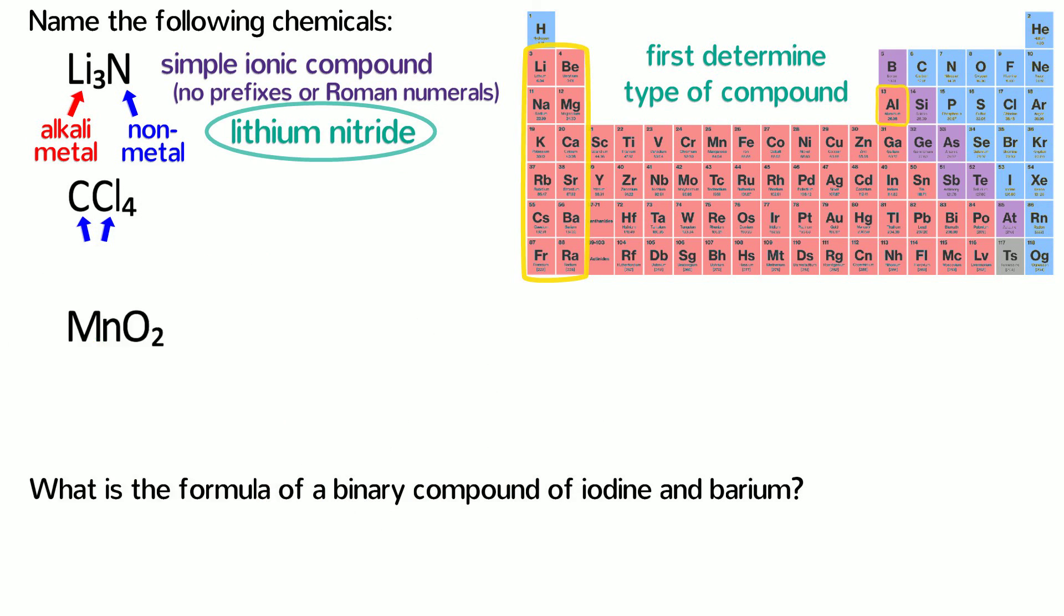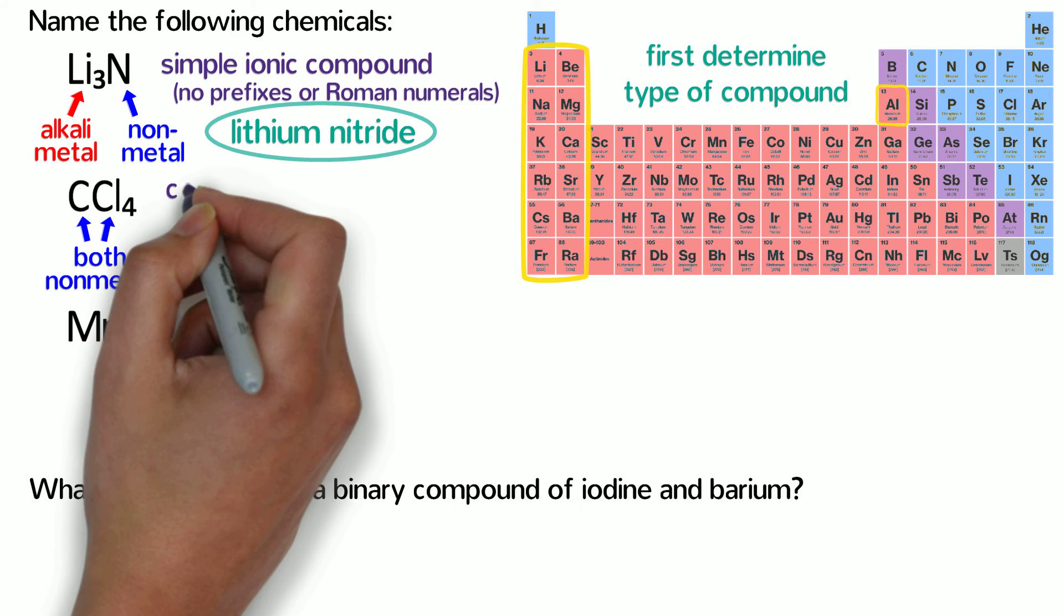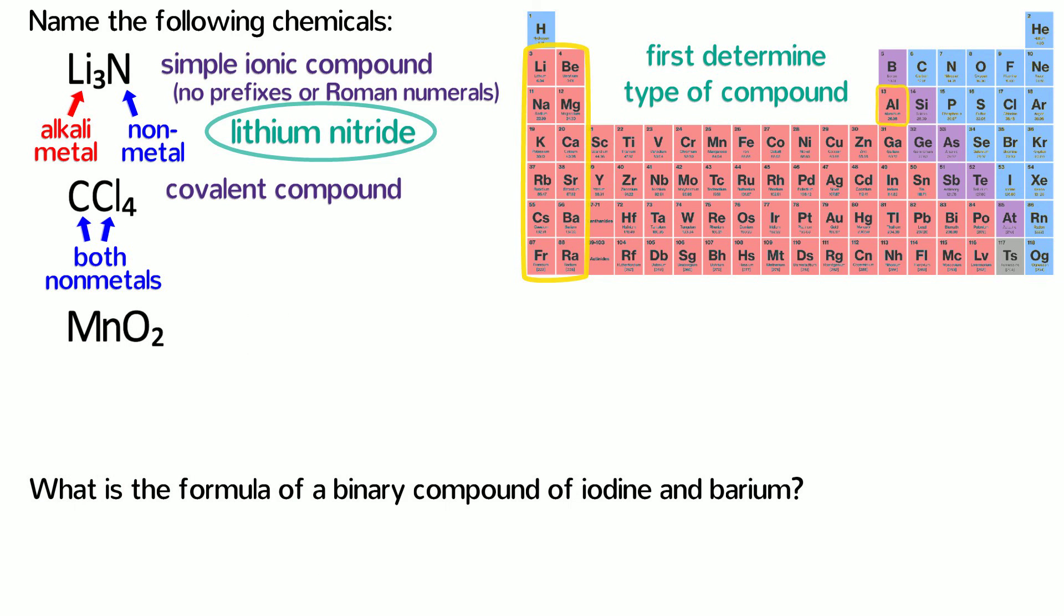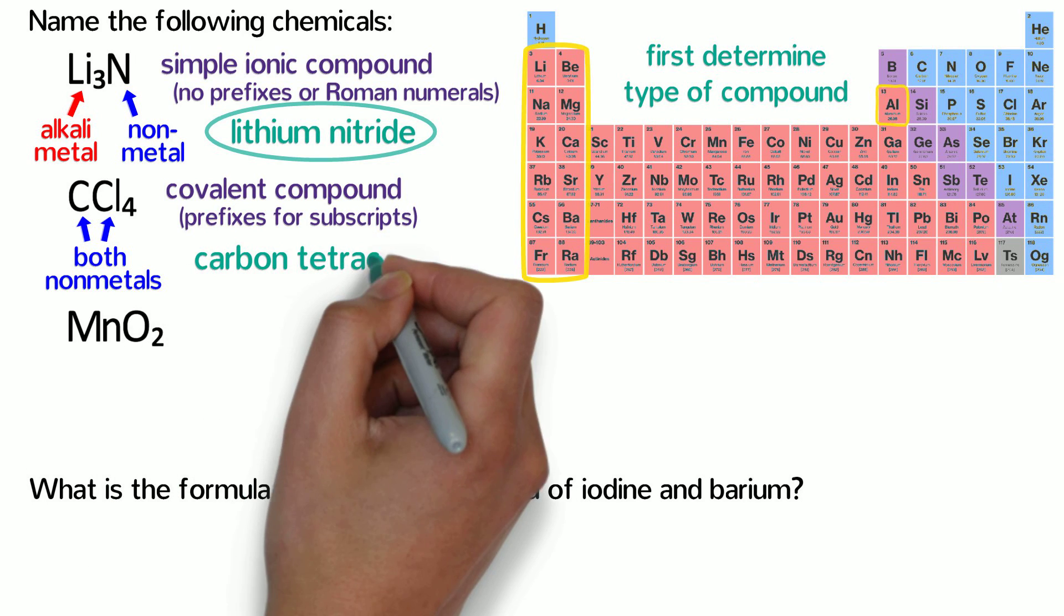The second compound is composed of two nonmetals, so it's a covalent compound. That means its name uses prefixes for subscripts, so its name is carbon tetrachloride. Remember that the mono prefix is not used for the first element.